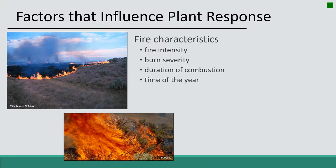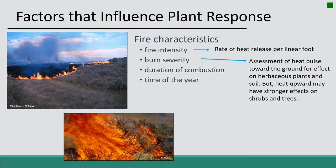Plant responses to fire are influenced by three categories: fire characteristics, plant characteristics, and environmental characteristics. In fire characteristics there are four components. Fire intensity is the rate of heat release per linear foot, typically measured on a head fire flame front. Burn severity is an assessment of the heat pulse toward the ground affecting herbaceous plants and soil — when restoring a burned area, burn severity is critical to understand how much heat actually impacted the ground.